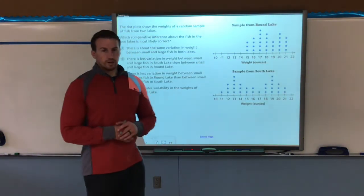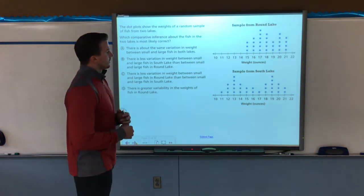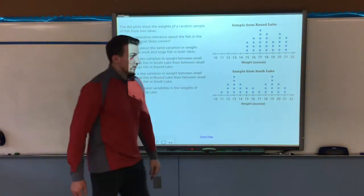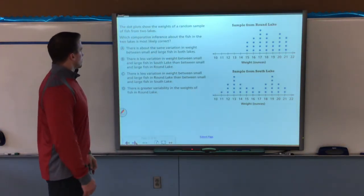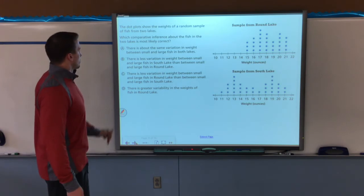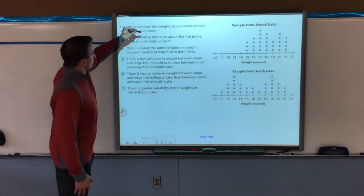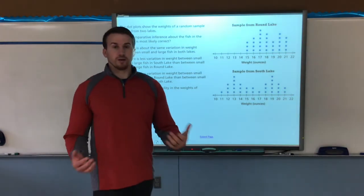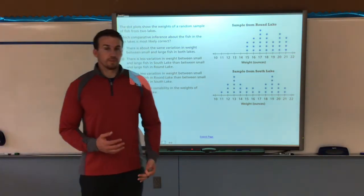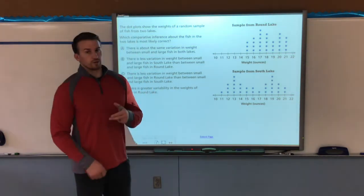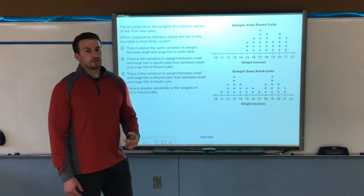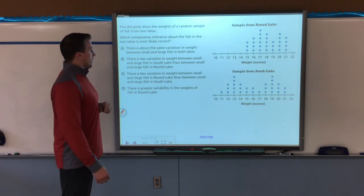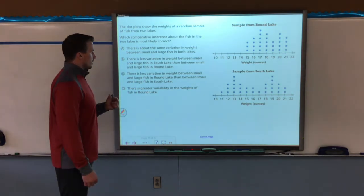Last example here. We have two dot plots showing the weight in ounces from samples from the round lake and the south lake. So it shows the weight of fish for both lakes. And now it's asking us which comparative inference about the fish in the two lakes is most likely correct. So this is kind of an MCA style question, which is why we have this example in your notes. Because this is the kind of question you're going to see on the MCAs. And then we can't help you. So pay attention now.